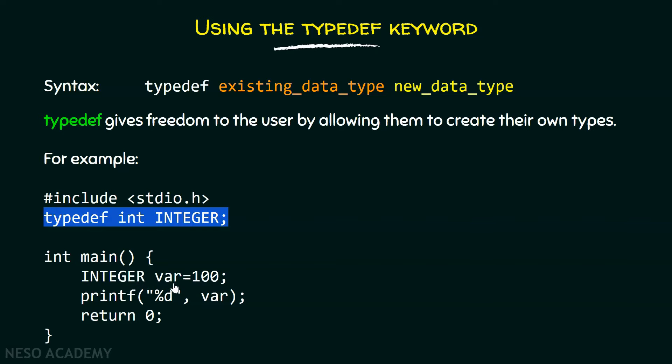We have declared a variable var which is of type int and the value assigned to it is 100. We can print this value on the screen but we can see here int is now replaced by integer.